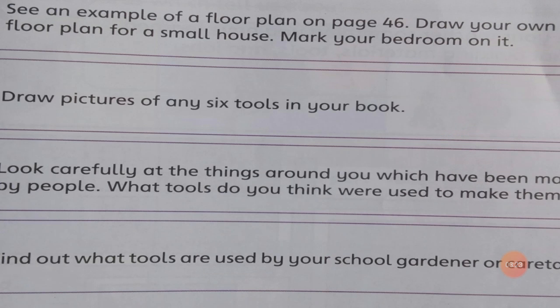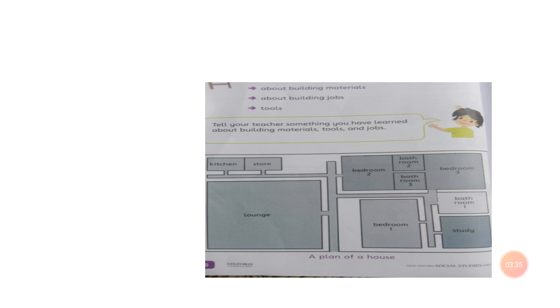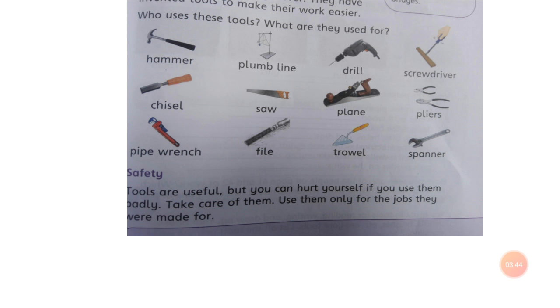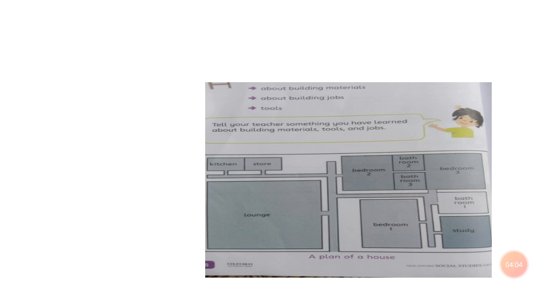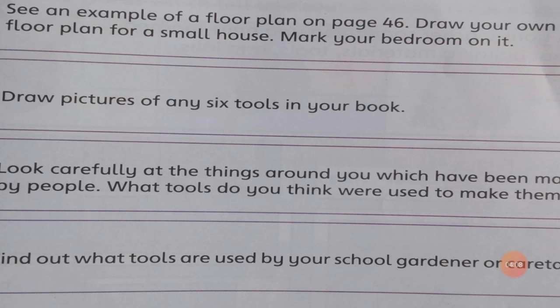Your fourth task is to draw pictures of any six tools in your book. You can see pictures of tools like hammer, plumb line, grill, screwdriver, chisel, saw, plane, pliers, pipe wrench, and file. Your fifth task is to look carefully at the things around you which have been made by people and think about what tools were used to make them.